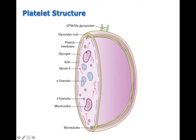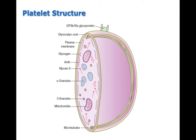A typical platelet lacks most organelles, though you do see a little mitochondria. There's actin and myosin that support the platelet's structure and play a role in platelet contraction during hemostasis. Microtubules and other cytoskeletal elements are also present. Platelets are full of granules containing clotting factors like serotonin and calcium. They also have glycoprotein spikes on the outside, which are significant for platelet adhesion to collagen fibers when there's a wound.